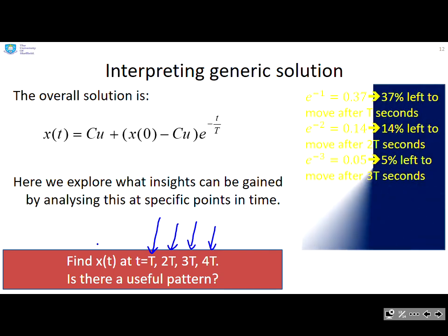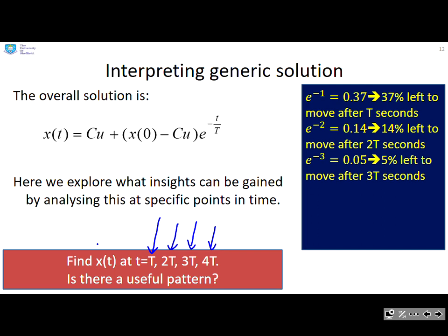So this is what you get. If you put t equals capital T, then this term here is going to become e to the minus one, and I know the value of that is 0.37. So essentially I'm 37% away from steady state after one time constant. If I put 2T in, I get an e to the minus two, which is 0.14. So I'm 14% from steady state after two time constants. And you can see 5% after three time constants.